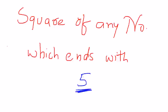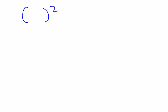You can always find it in the description below. Now discussing this method — after watching this video I assure you it won't even take you a second to calculate the square of any number which ends with the digit 5. The trick says: for all numbers which end with the digit 5, the square would end with the digits 25.